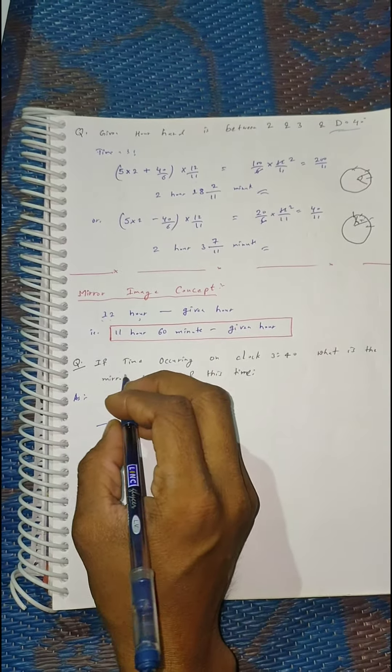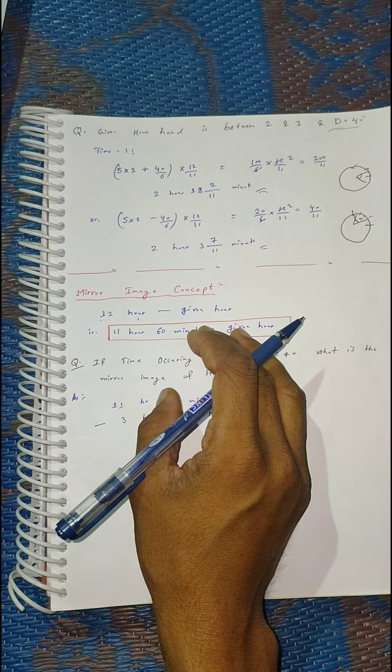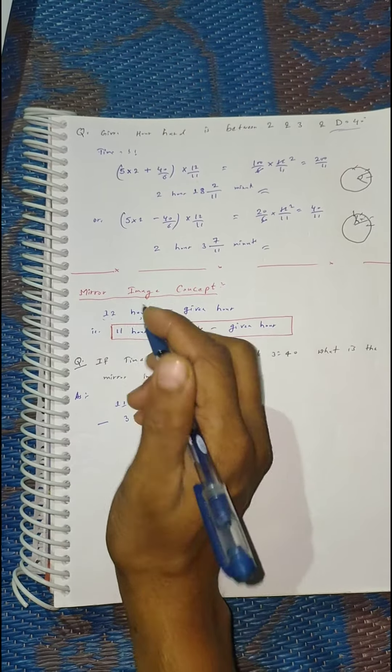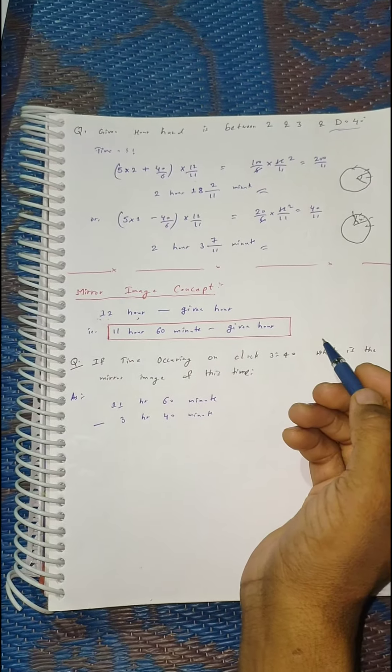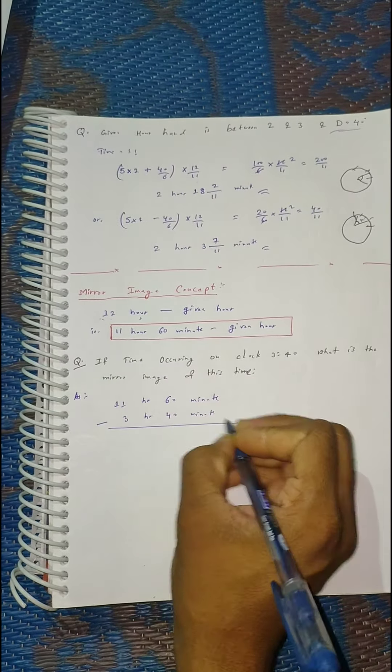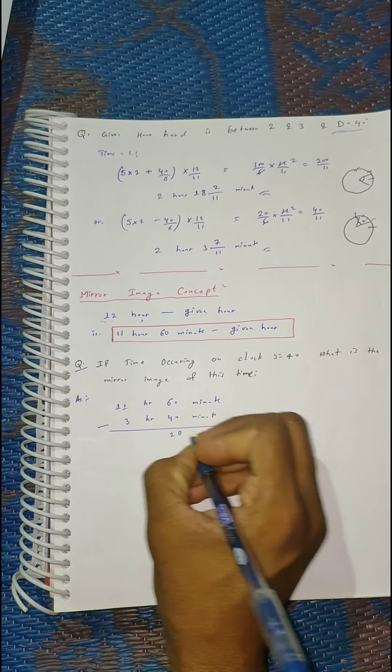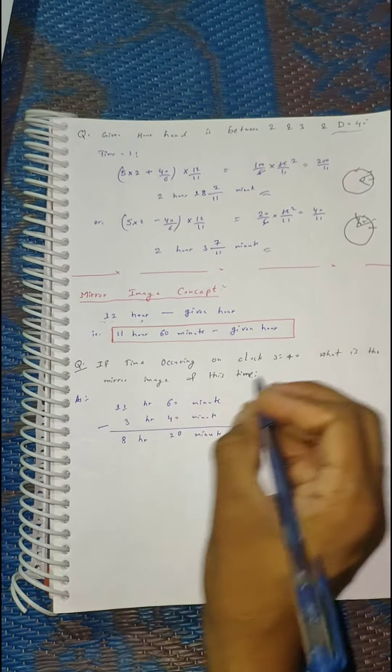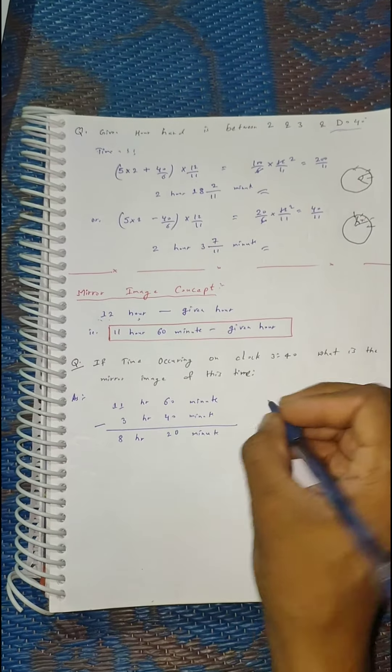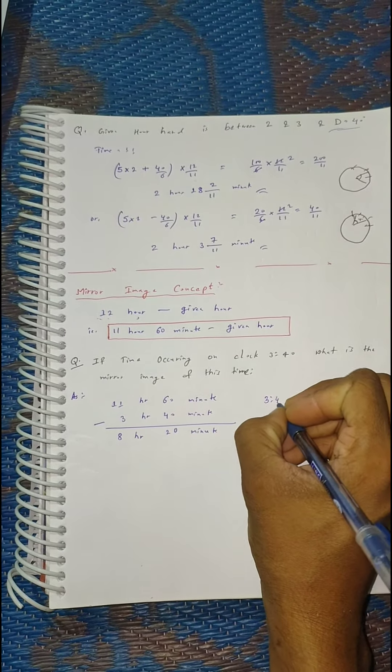If sometimes the examiner asks about a 24-hour watch, then you use 24 hours minus the given hour. This comes out to 8 hours 20 minutes. So the mirror image of 3:40 is 8 hours 20 minutes.